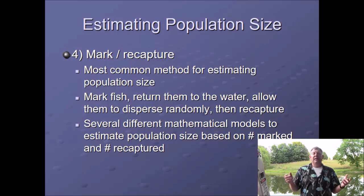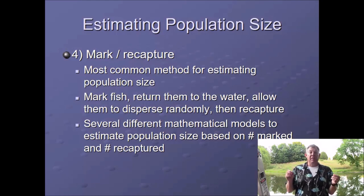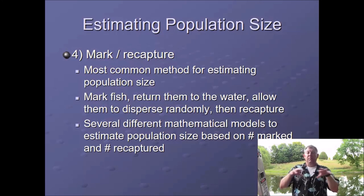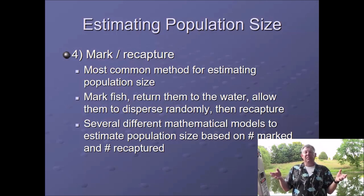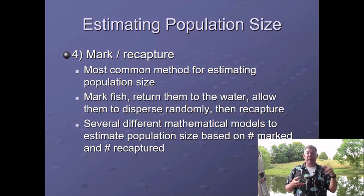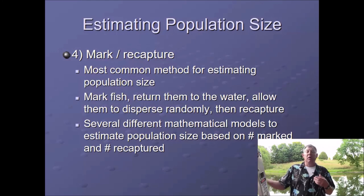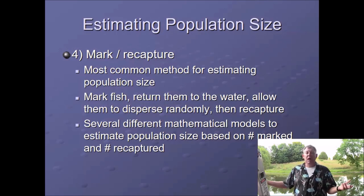Mark recapture is not just for fish — it's used a lot in ecology. The basic idea is you go out, take a sample of organisms, mark them somehow, then release them. You assume those marked organisms will disperse themselves randomly among all the unmarked organisms. You wait a couple days to give them time to do that, then take another sample. In that second sample you'll get a lot of unmarked organisms but probably a few marked ones — we call these recaptures or recaps. Based on the number marked, the number recaptured, and the number of unmarked ones in your second sample, you can do some math and get a good estimate of population size.